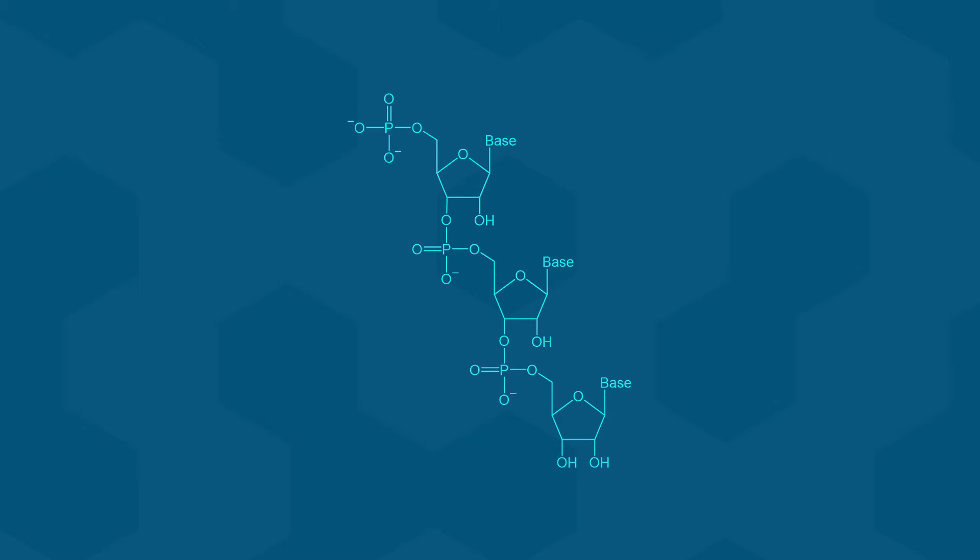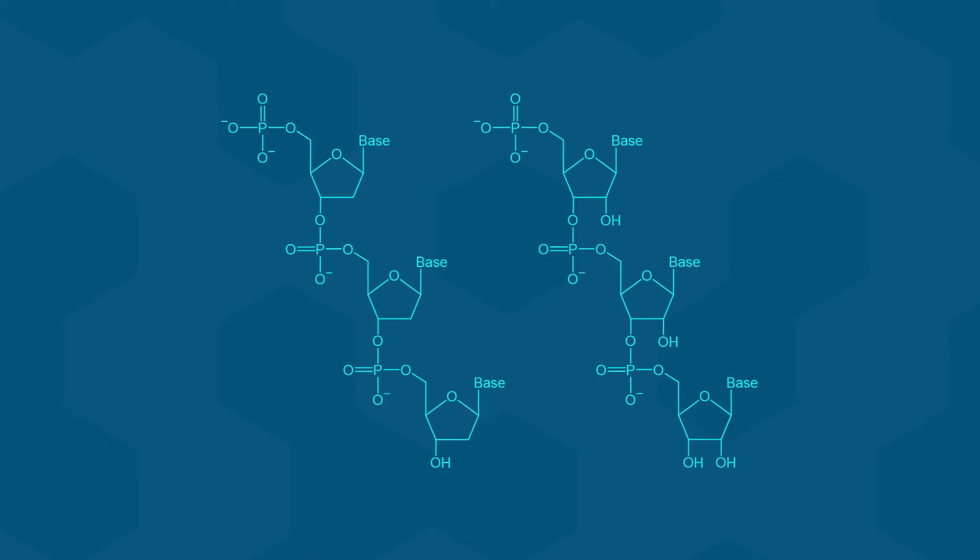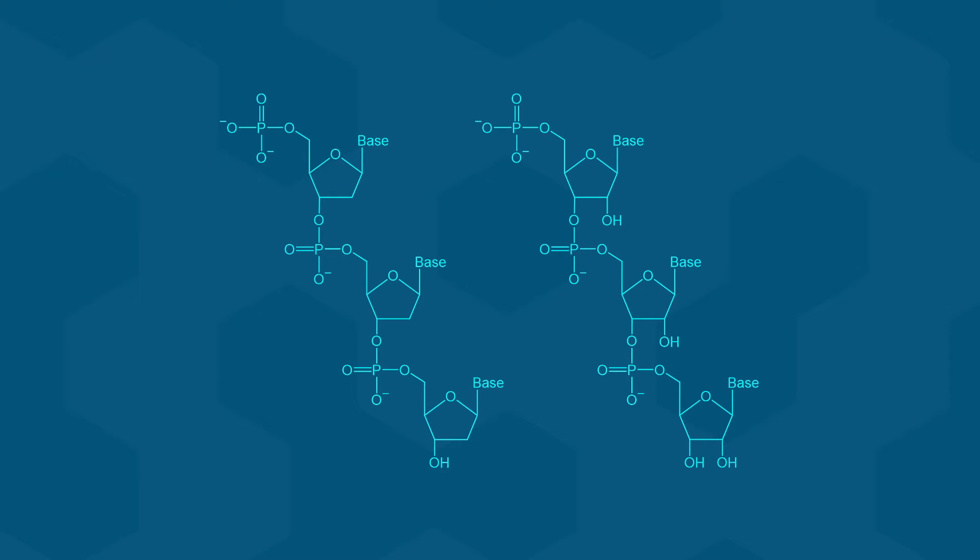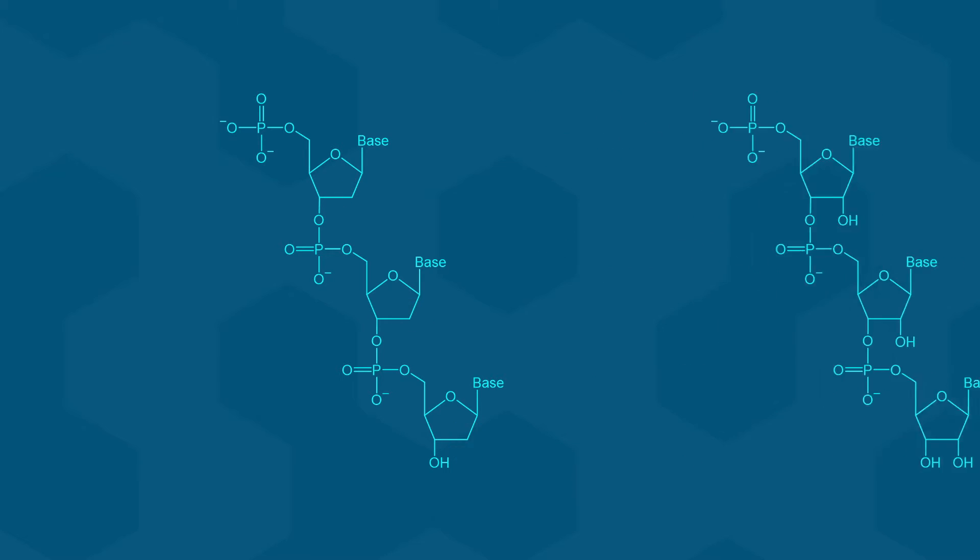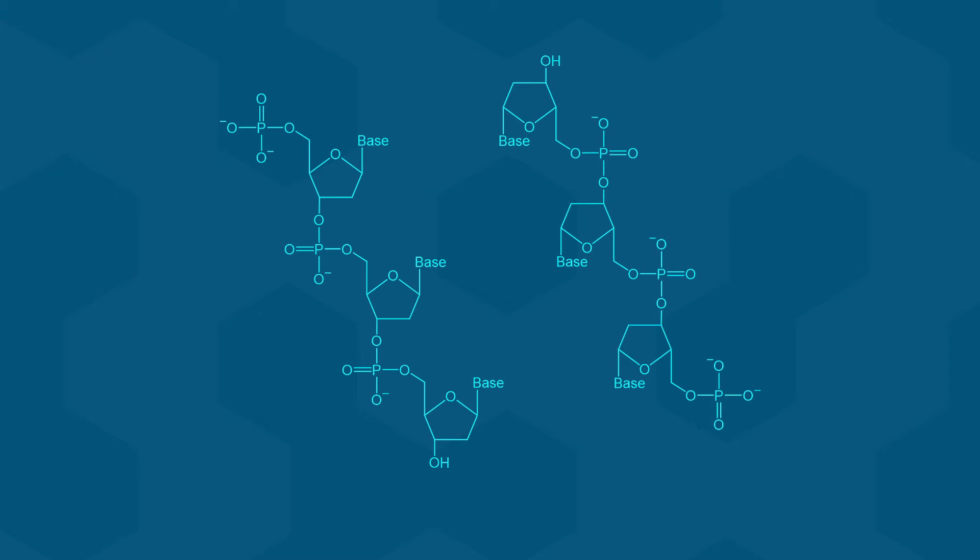I mentioned DNA a moment ago, so let's talk about it. The structure of a single DNA chain is the same as what we just saw for RNA, except of course the lack of the 2' hydroxyl groups and the use of T instead of U. However, the really big difference is that DNA exists as a double strand, with two chains of DNA interacting with each other.